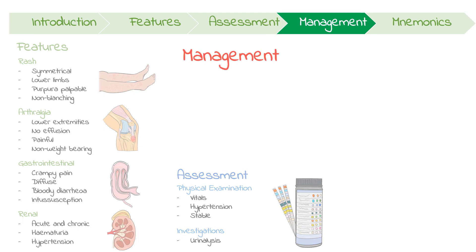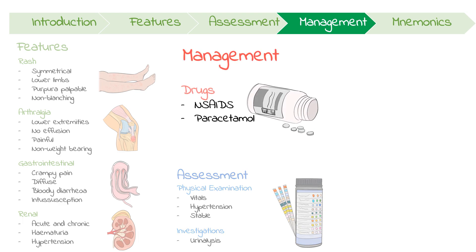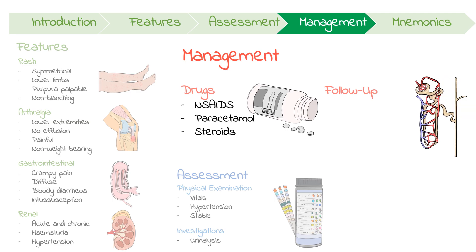Management is usually supportive. Acute NSAIDs and paracetamol can be given to alleviate the arthritis. Steroids do provide significant relief for both severe abdominal pain and joint pain, but remember they don't impact the rate of long-term kidney complications. The most important part of management is follow-up to identify subsequent renal involvement, necessitating regular urinalysis and blood pressure monitoring for a whole year.